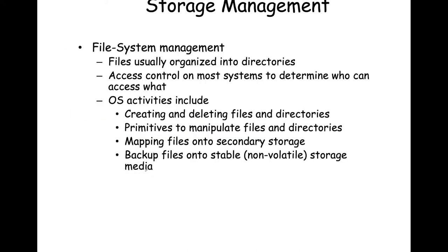What is file system management? It's usually organized into directories. A directory is nothing more than a table containing file names, where those names correspond to beginning locations on disk for blocks of data. The file system provides access control, determining who can access a file. OS activities for file management include creation and deletion of files and directories, where a directory is a special table that can hold other directories or files. It has primitives to manipulate files and directories: you can add, delete, or rename them.